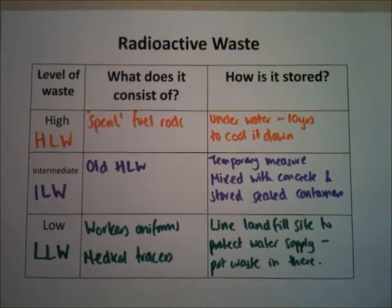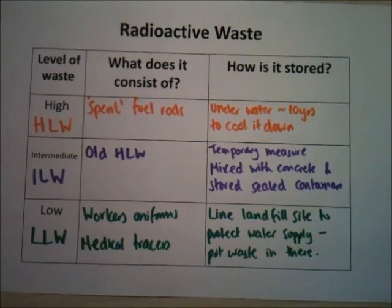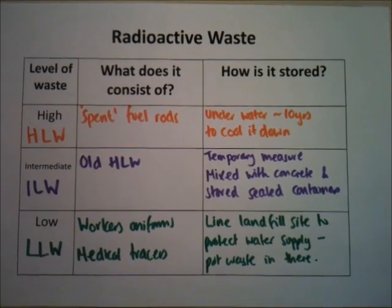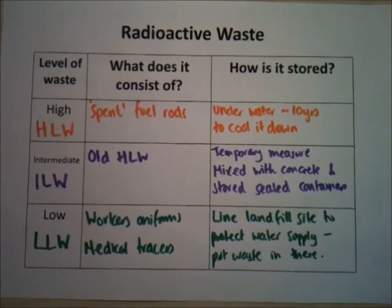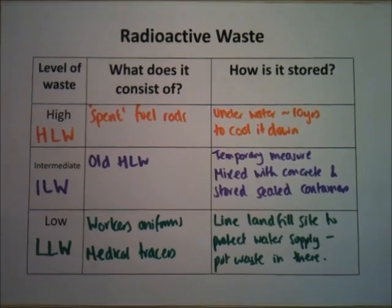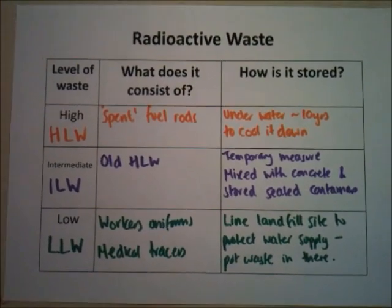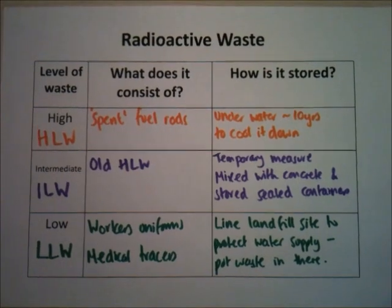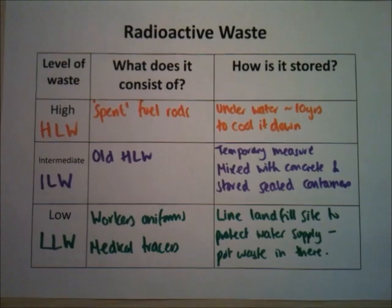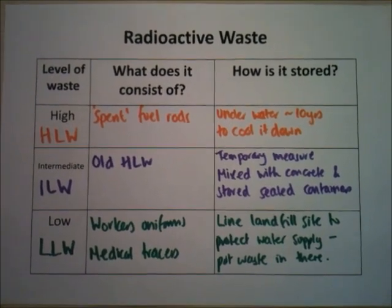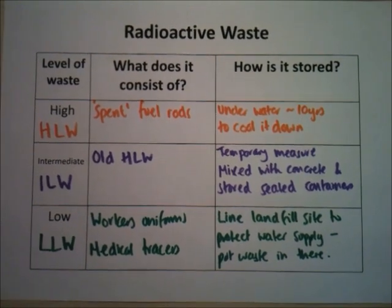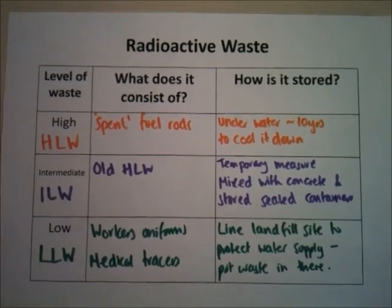It's really important to know about those three types of radioactive waste. To summarise nuclear power: you need to know what fission is and how it works, how a nuclear power station operates, the advantages and disadvantages, and how radioactive waste is handled and why it's dangerous — because it can emit alpha, beta, and gamma radiation and cause ionisation. The next video will cover how dangerous radioactive materials actually are.